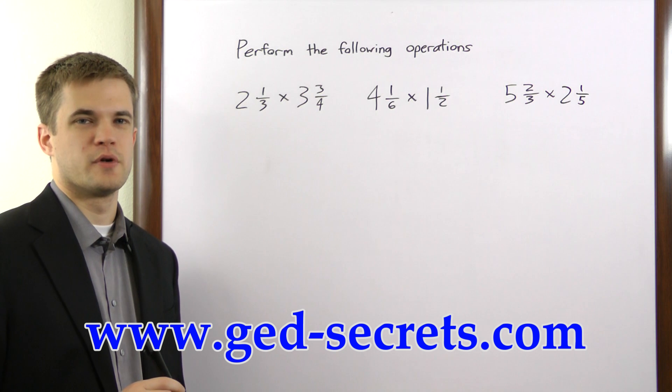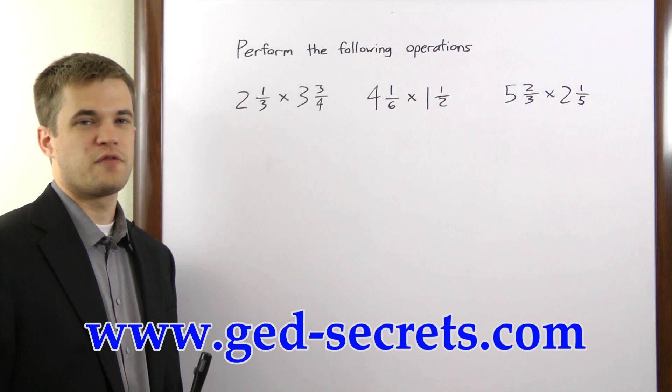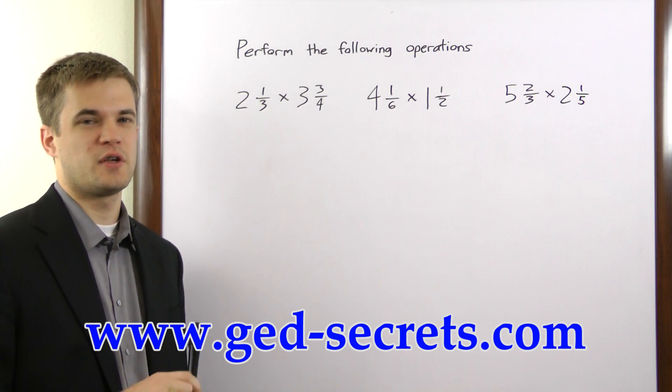In order to multiply two mixed numbers, you have to first convert both numbers to fractions. Then, after you multiply the fractions, you can convert them back to mixed numbers. Let's look at a few examples.